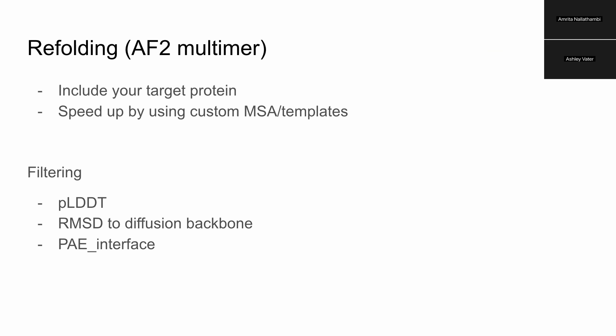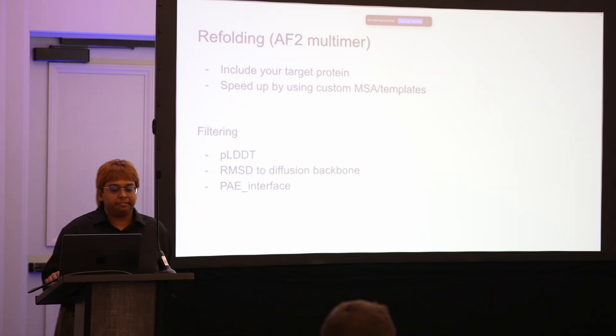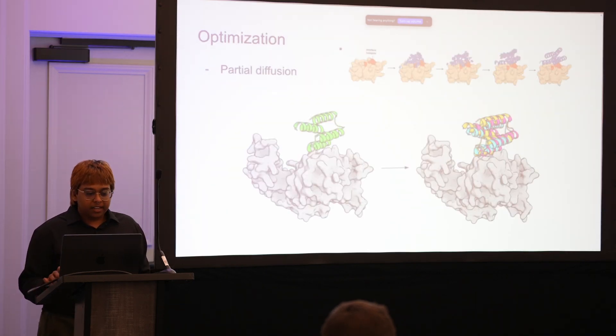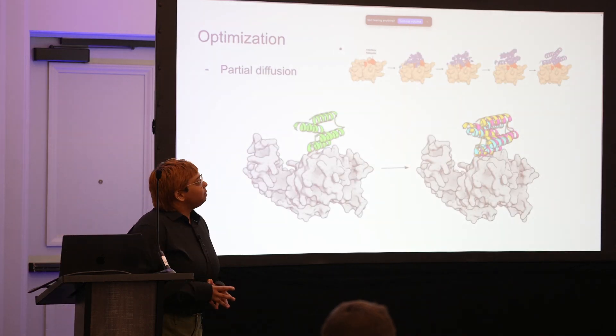For filtering once you have generated sequences and refolded them, we tend to use these three metrics. pLDDT is the per-residue confidence from AlphaFold. We want to see how close the AlphaFold prediction is to the original diffused backbone, and then the PAE of the interface, which we'll talk more about in the activity.